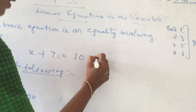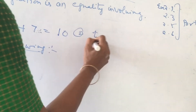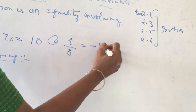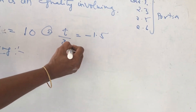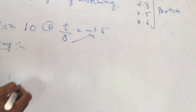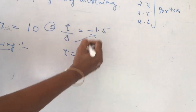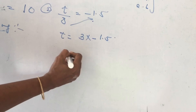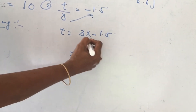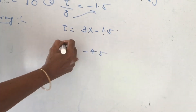Second sum: T by 3. The variable can be any letter. Now do you know what this step is called? Cross multiplication. Cross multiplication means the denominator will be multiplied by the number on the right side. Minus 3 into 1.5 is 4.5.